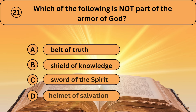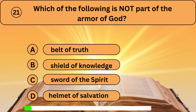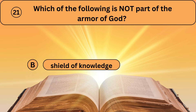The last question, question twenty-one. Which of the following is not part of the armor of God? A. Belt of Truth. B. Shield of Knowledge. C. Sword of the Spirit. D. Helmet of Salvation. Shield of Knowledge is the right answer.